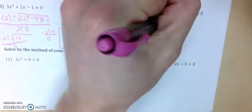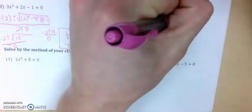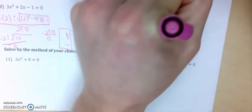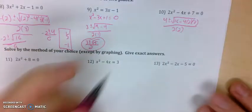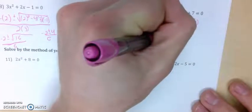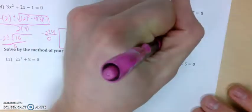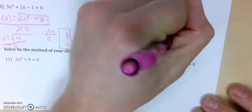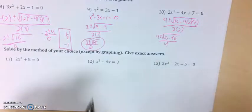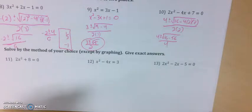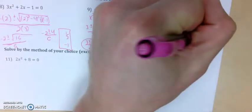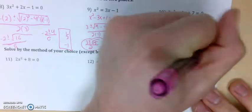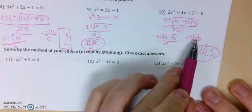For number 10, the opposite of b is 4, plus or minus the square root of b squared — 16 — minus 4 times a times c, all over 2 times a. Simplifying the discriminant — the stuff under the radical — I get 16 minus 56, which is negative 40. So I have 4 plus or minus the square root of negative 40 all over 4. That gives no real solutions because we cannot take the square root of a negative value.